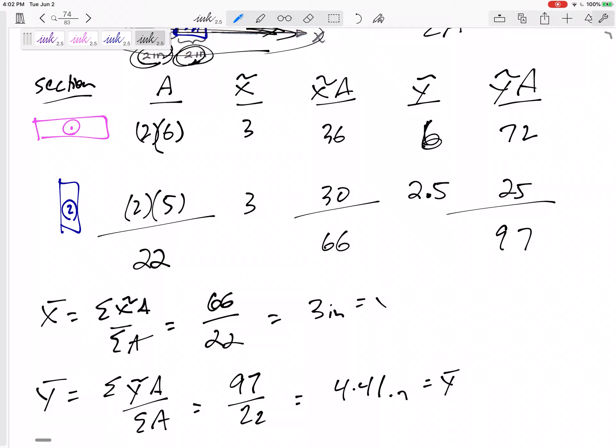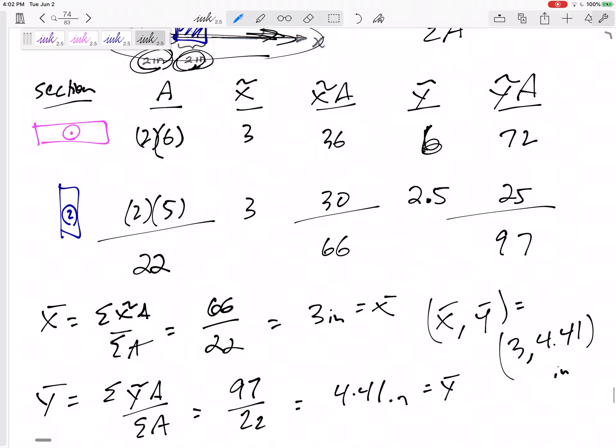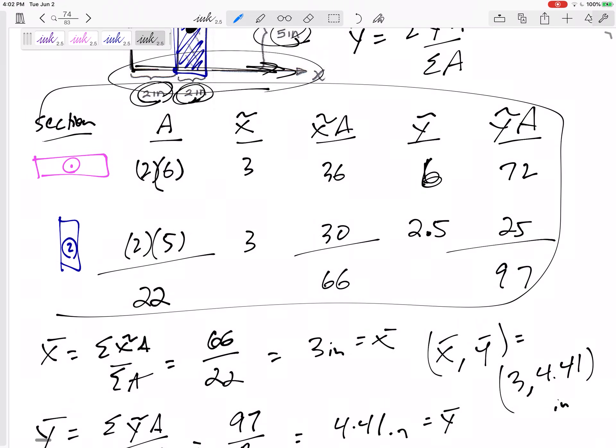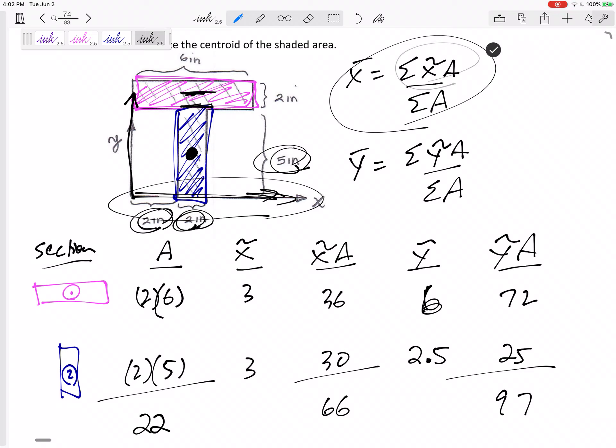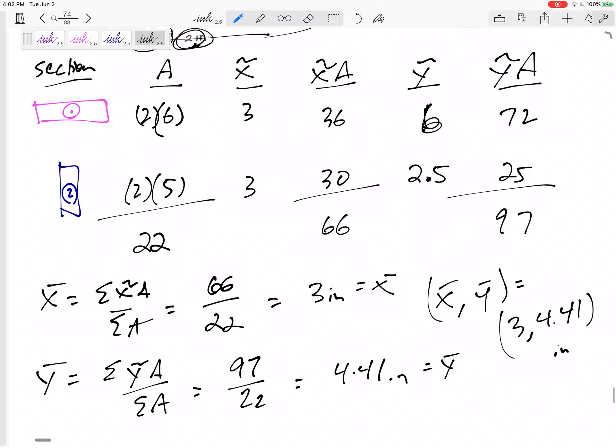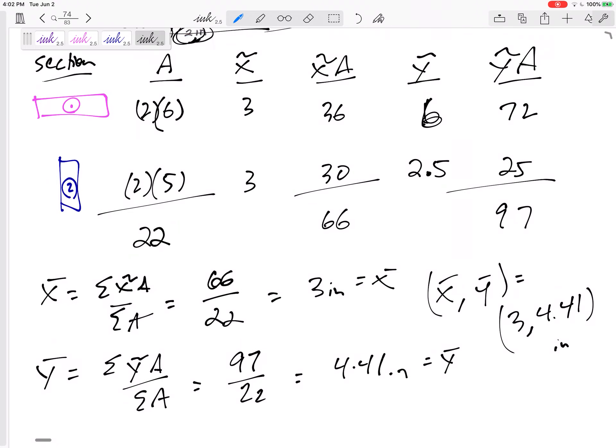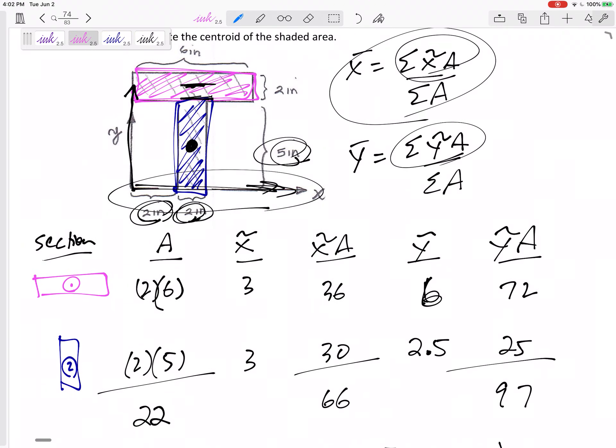Right? So this would be X bar. Y bar is three, 4.41 units are inches. So you see how this little chart, this table can really organize your thoughts and your problems, but you're still, this is what you're doing, right? You're summing X tilde a over summation of a, you're summing Y tilde a over summation of a. And see if this makes sense. So it makes sense that the centroid is at 3 comma 4.41.